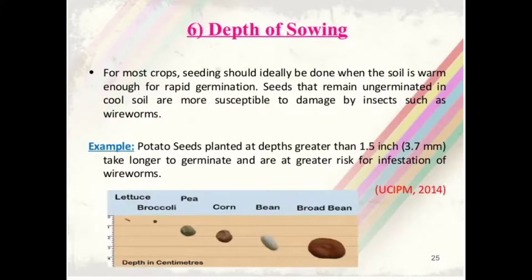The next practice is depth of sowing. For most crops, seeding should ideally be done when the soil is warm enough for rapid germination. Seeds that remain un-germinated in cool soil are more susceptible to damage by insects such as wireworm. For example, potato seeds planted at depths greater than 1.5 inches take longer to germinate and are at greater risk of wireworm infestation.